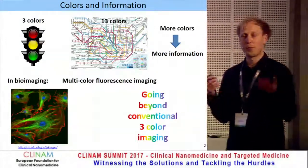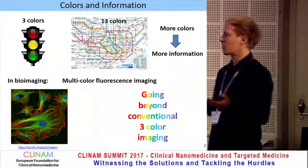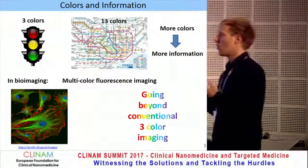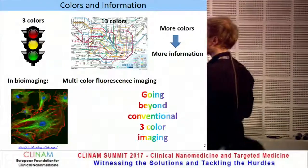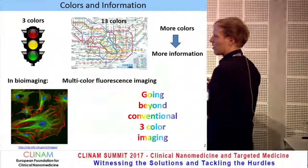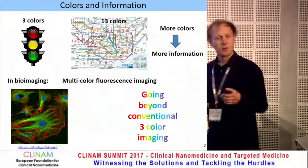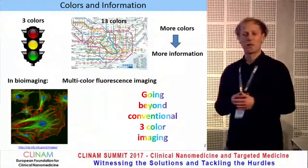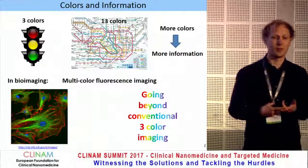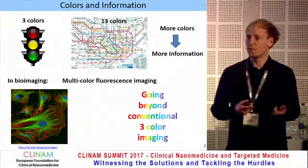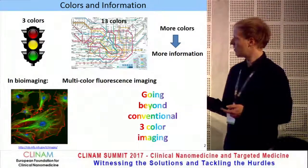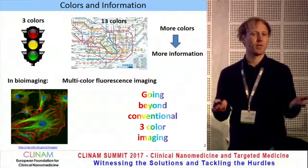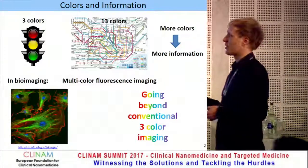In multicolor fluorescence imaging, each probe — each color — should be specific to a certain structure or population. But this is somehow limited with respect to the number of colors you can use, based on the laser lines you have and the emission colors available. So how can we go beyond this conventional three to four color imaging?